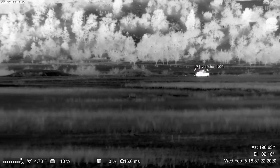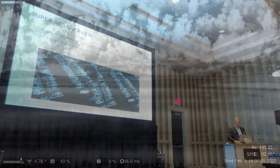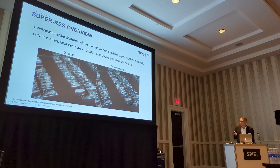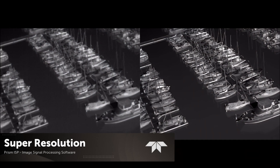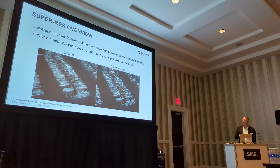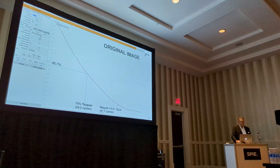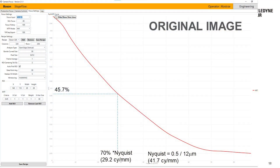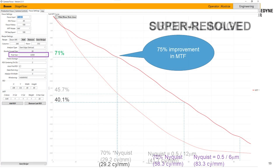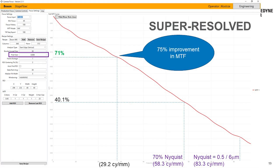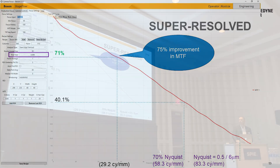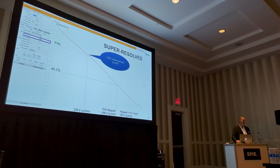This inference will run in 5 or 6 milliseconds. This is an example of our super resolution — it's very computationally taxing, at 100,000 operations per pixel per second. To close, here is some of the impact of super resolution on MTF: we found that the MTF is improved by about 75% running our super resolution.